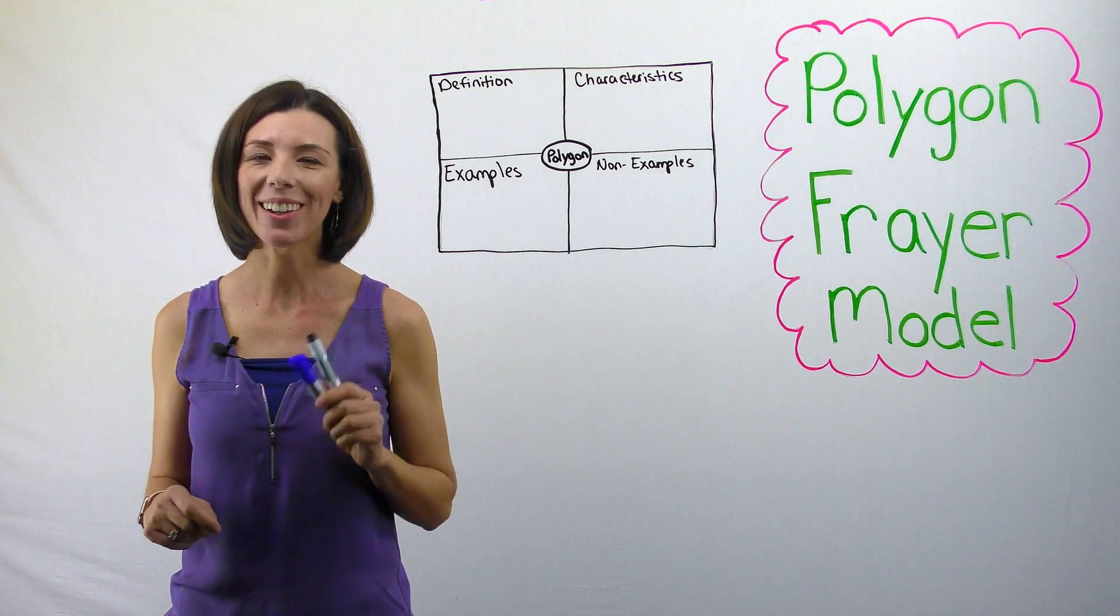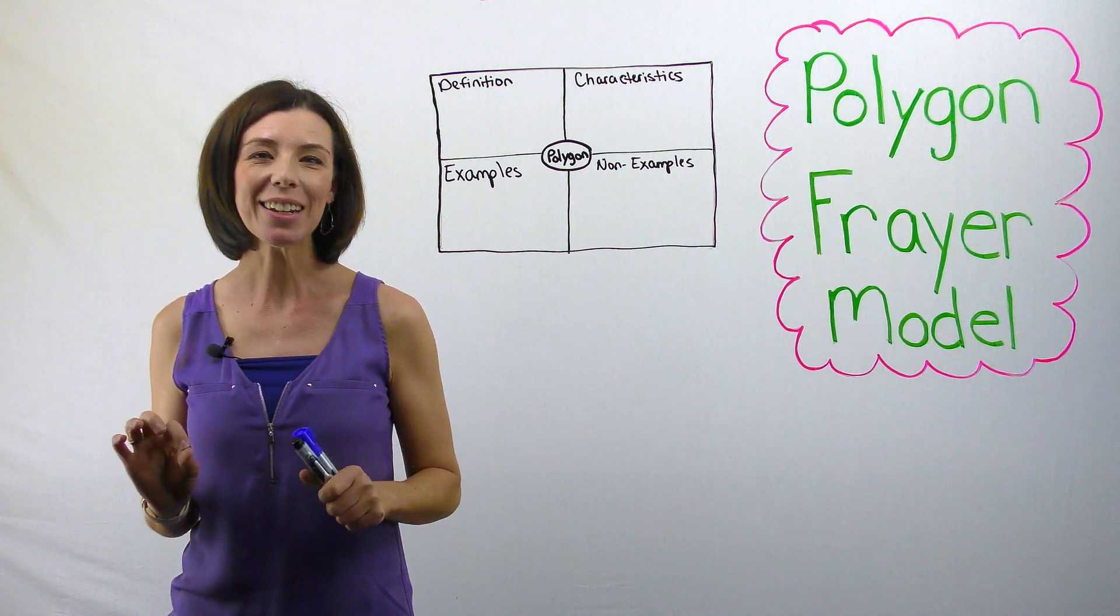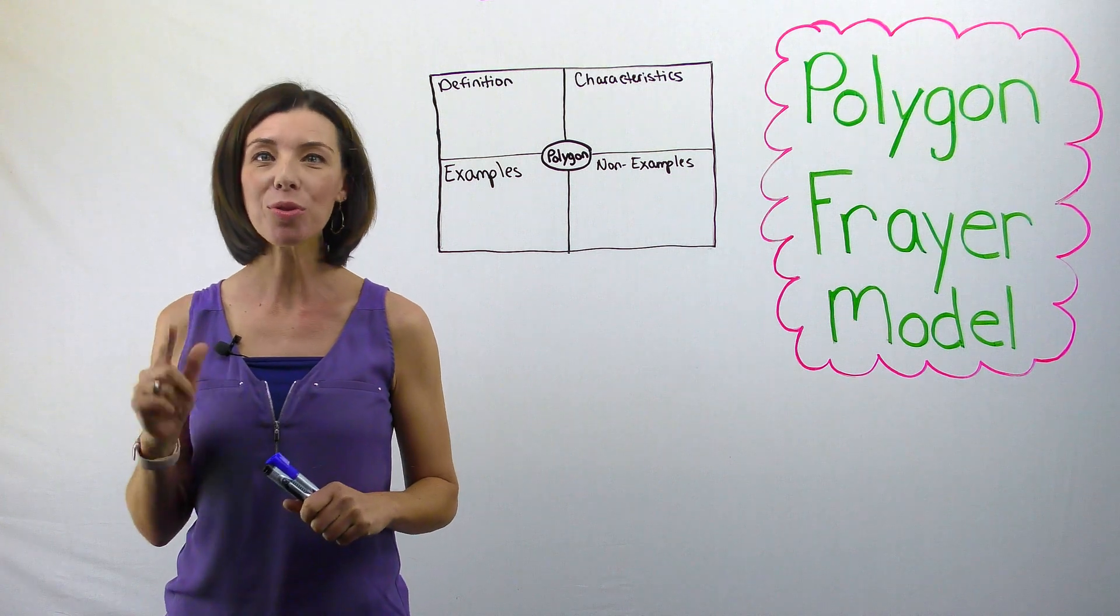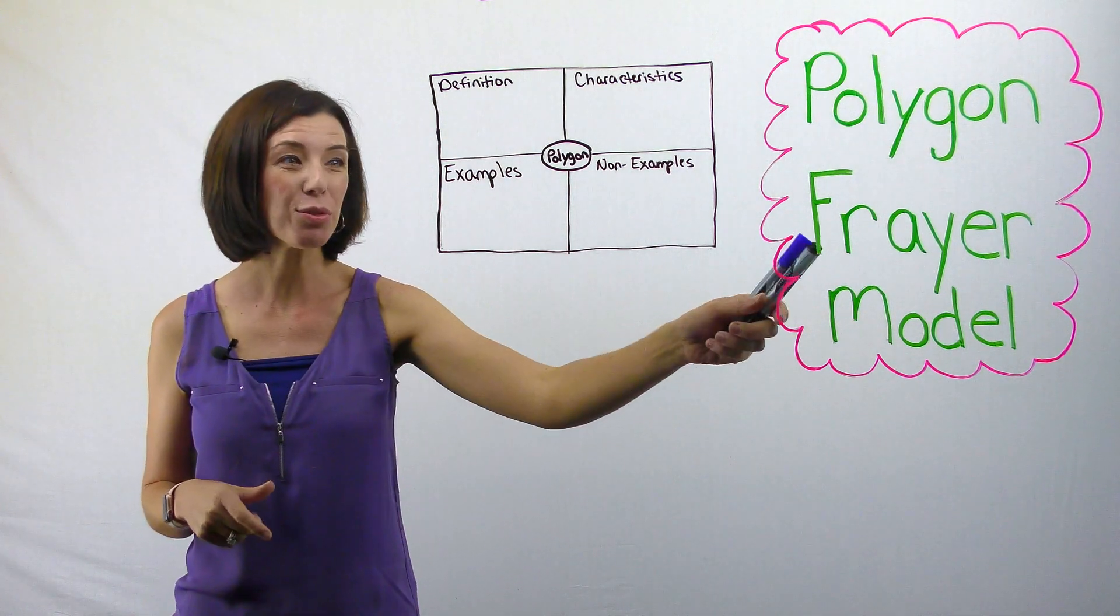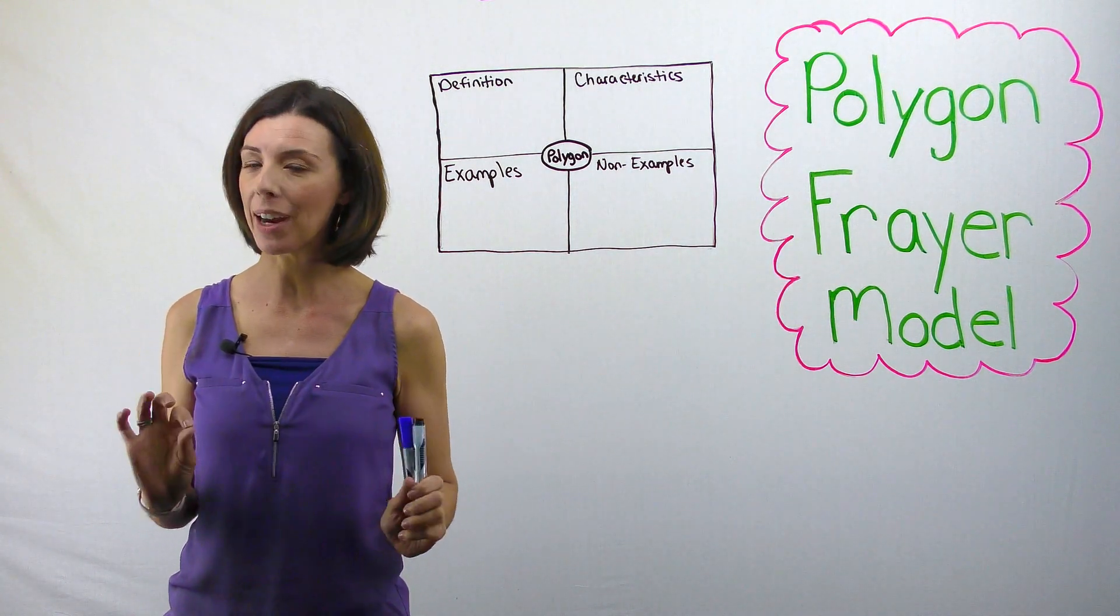Today, we're going to be talking about polygons. So for this next activity, you're going to need your Frayer model. It looks like Frayer, but we pronounce it Fryer.